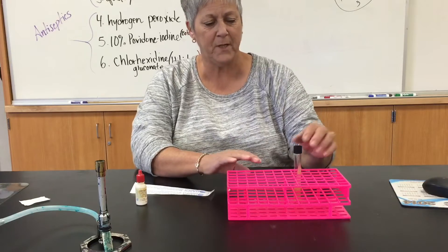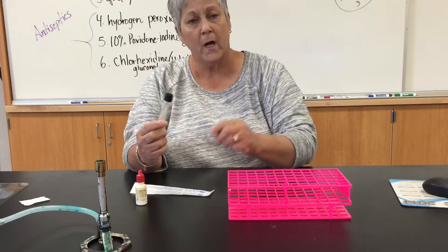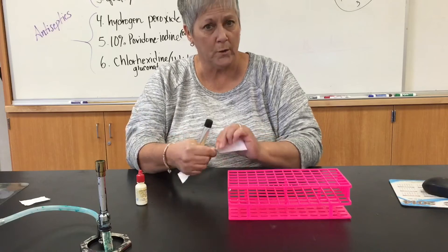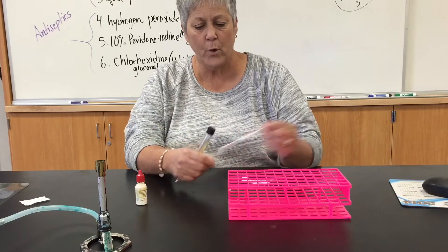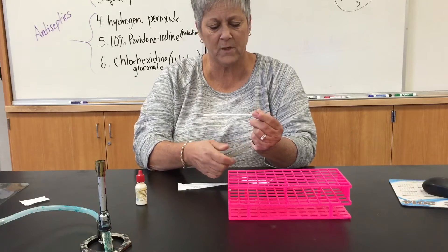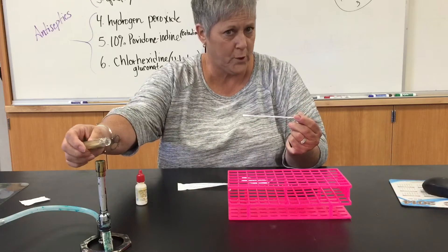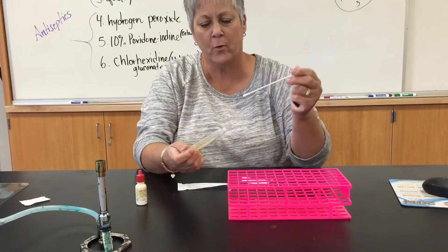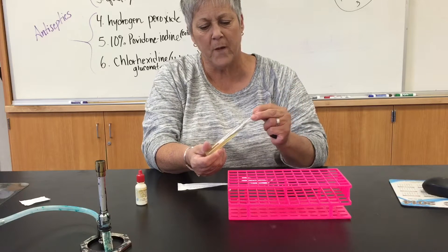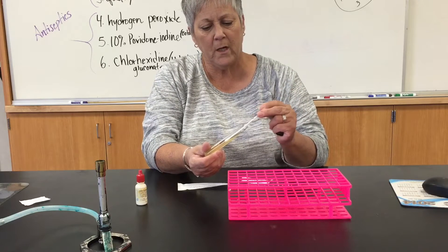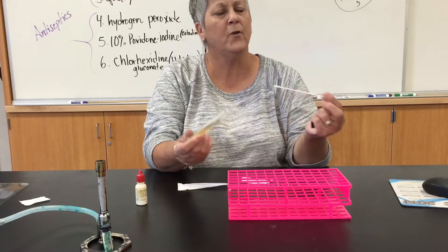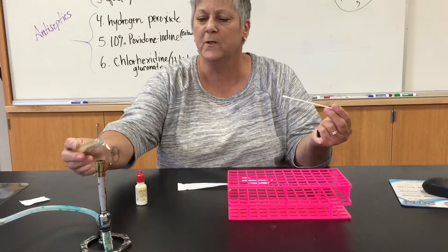Using aseptic technique, I would inoculate my slant with a sterile swab and I would want to cover the entire surface of the slant — just pretending here — with microorganisms. I would go in with a swab full of the test organism and streak it up the entire length of the slant, trying to cover the entire surface area.